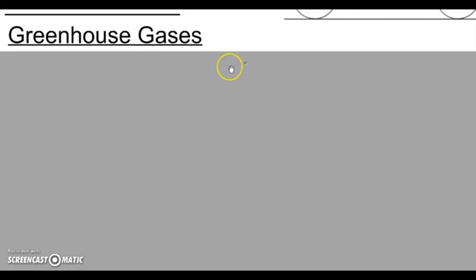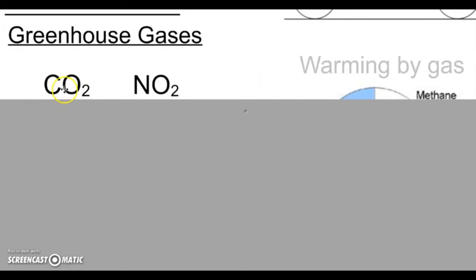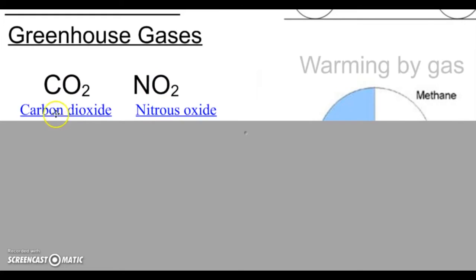We could talk about these for days, but what I really want you to understand is that there are some common ones: CO2, NO2, stand for carbon dioxide and nitrous oxide. This is the one that comes out of tailpipes or power plants. Nitrous oxide is made when we do a lot of industry stuff, making smartphones and making stuff.